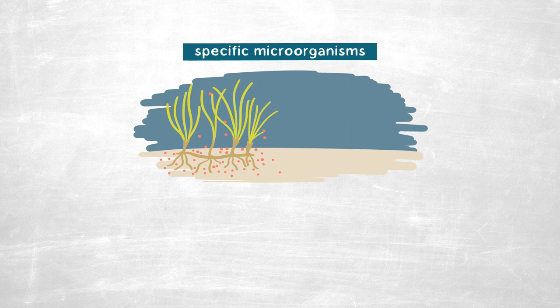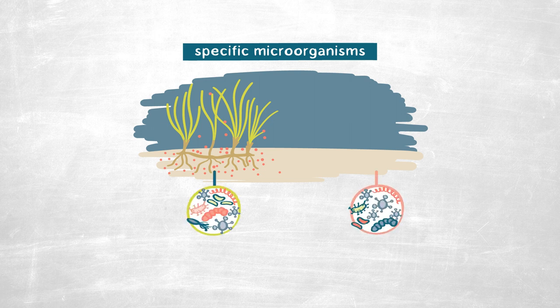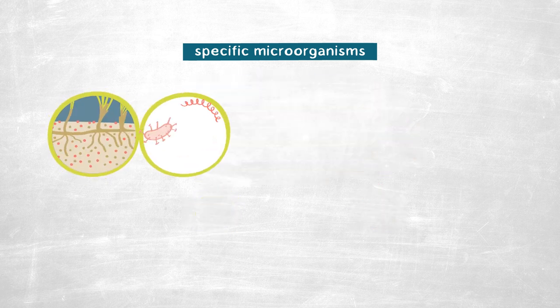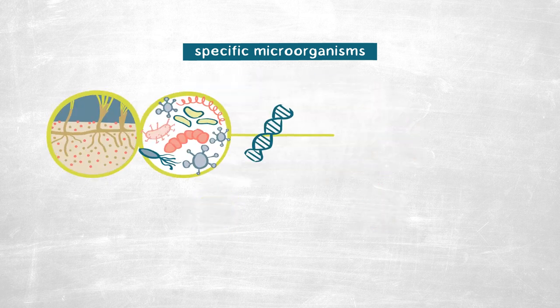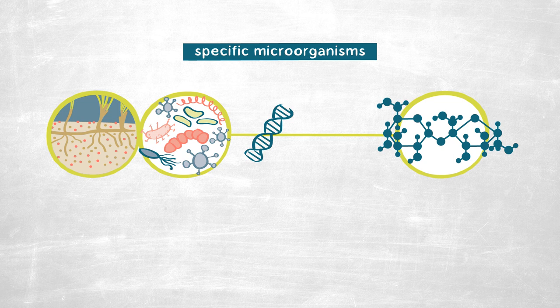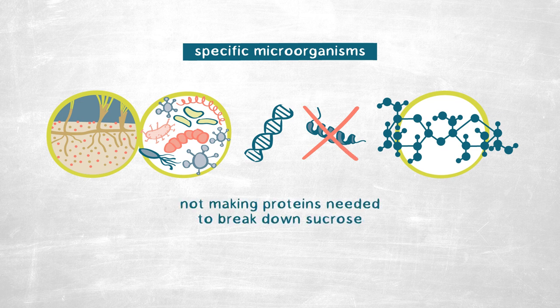To understand the microbial communities present, I first wanted to know whether the community underneath the meadow is specific to the meadow itself. I was able to show that the microorganisms occurring underneath the meadow are different from those occurring outside the meadow, and that they have the genes needed to use sucrose in their metabolism. However, very strangely, when we look at the transcripts or the expression of those genes, we find that they are not expressing them — they're not making the proteins needed to break down sucrose.